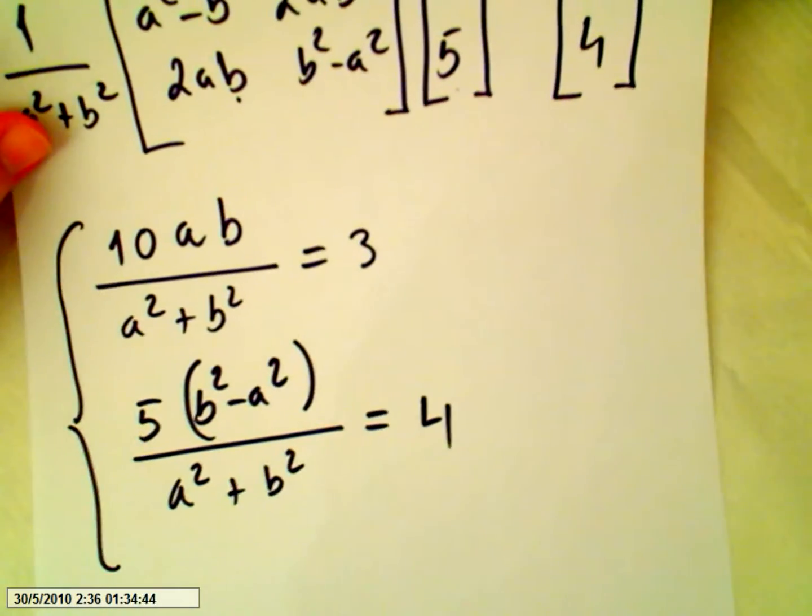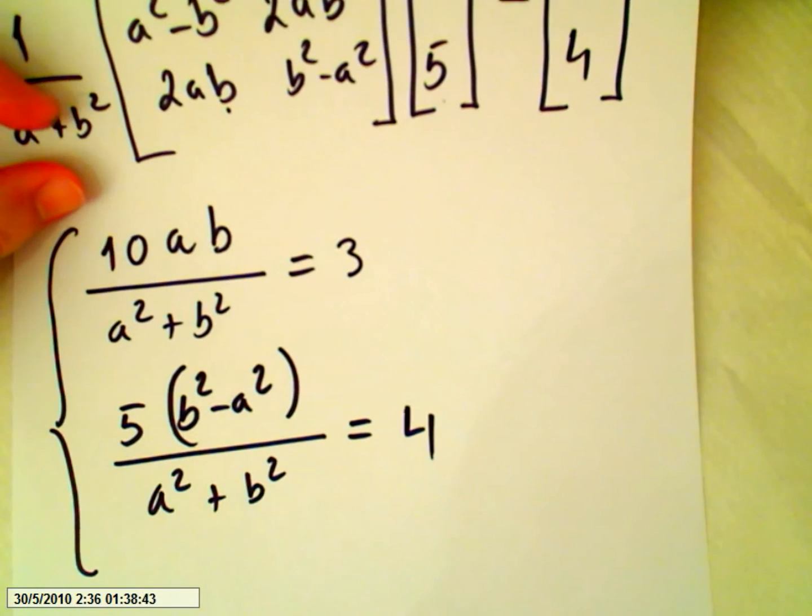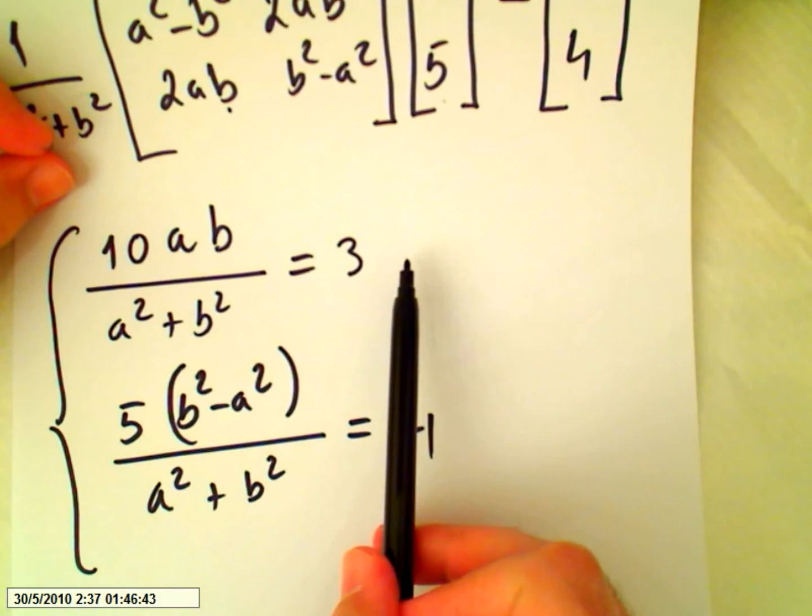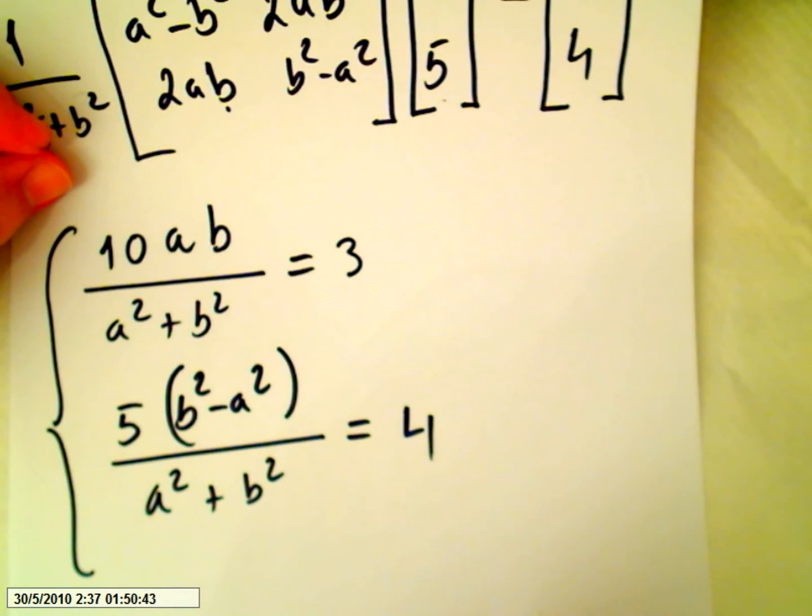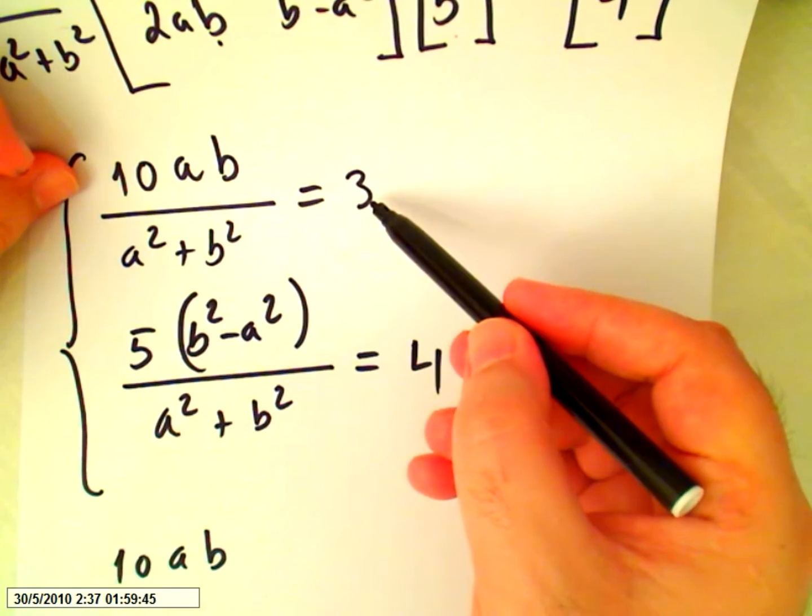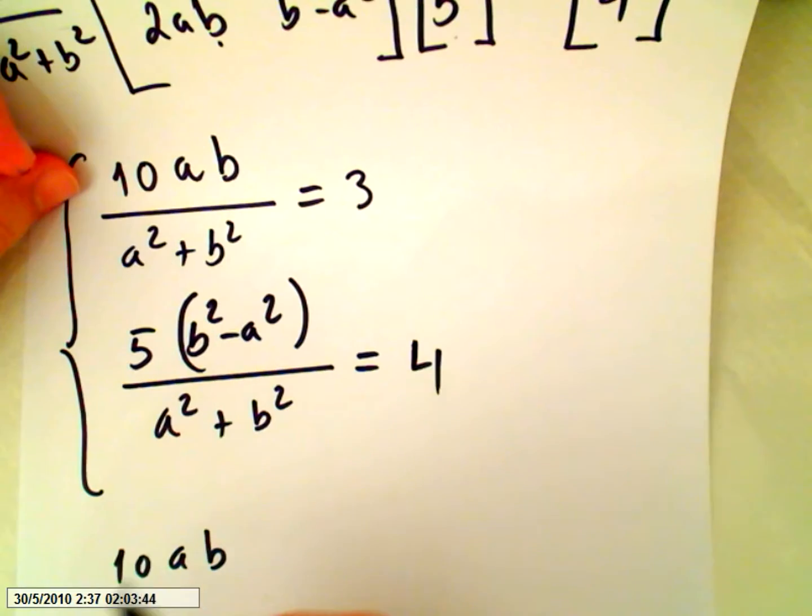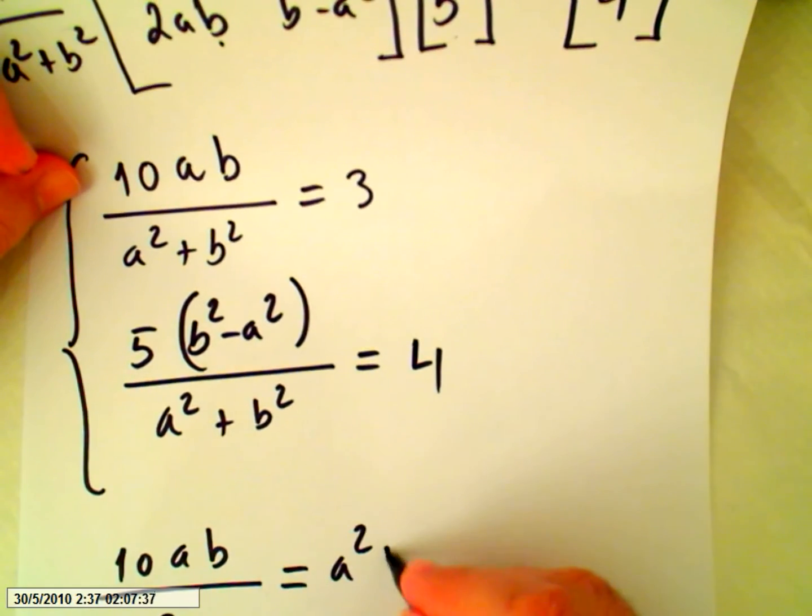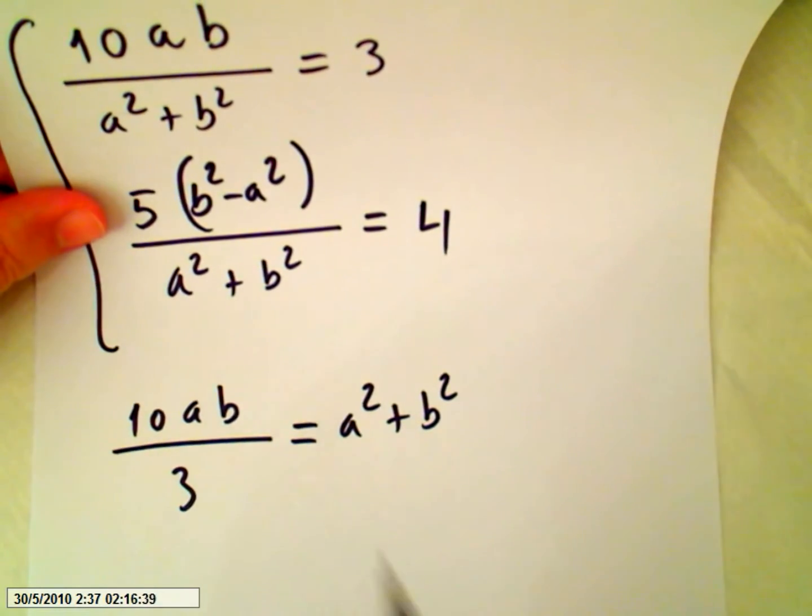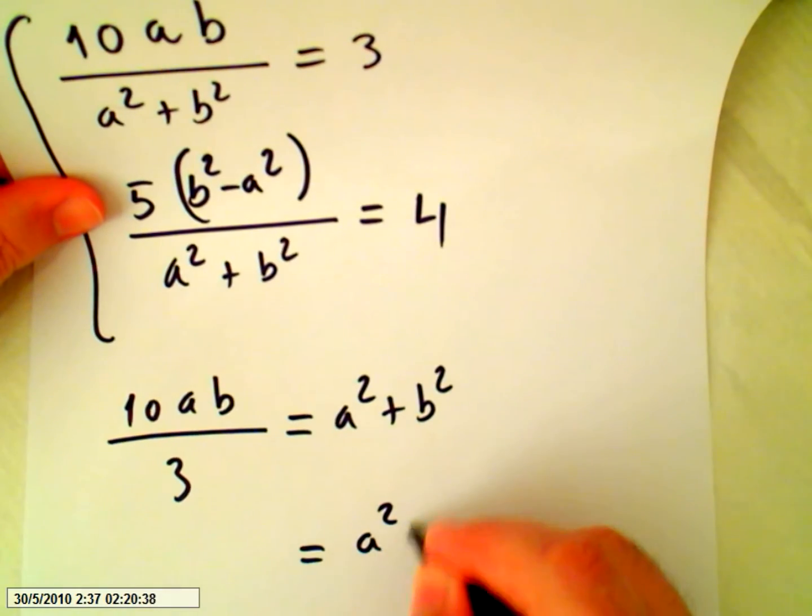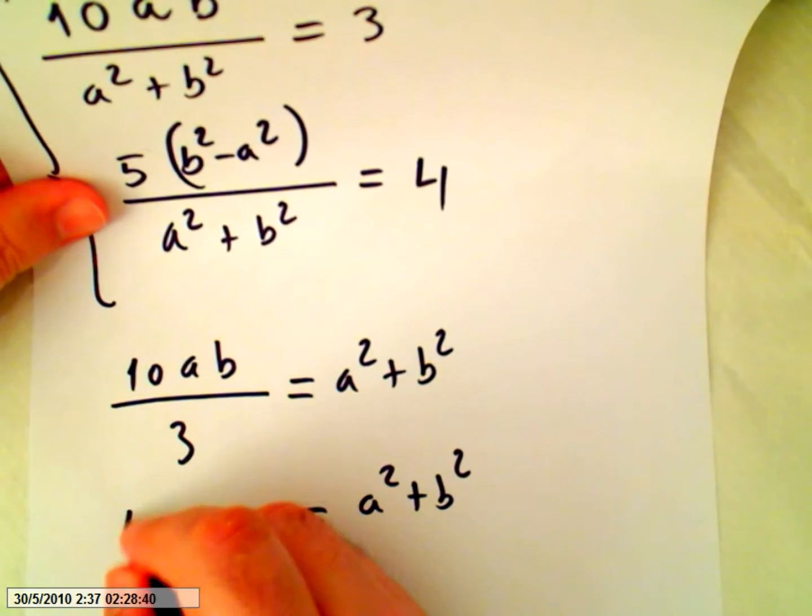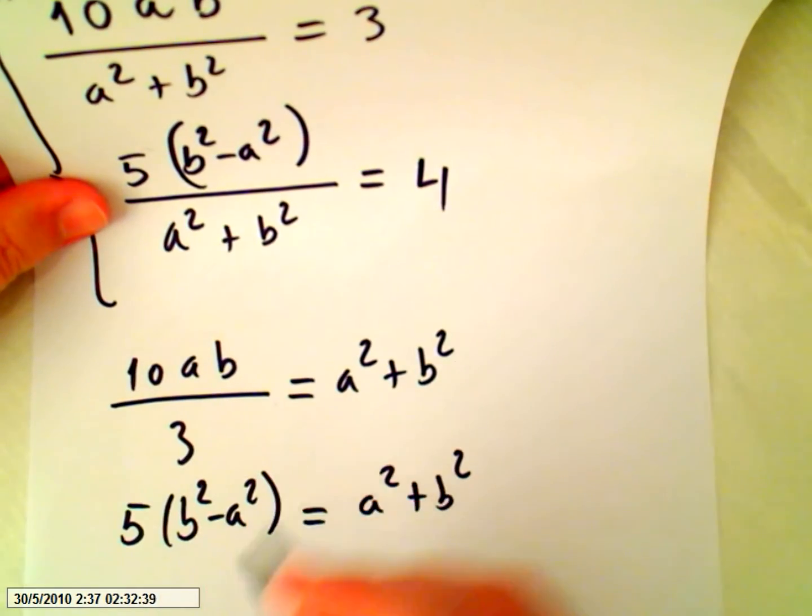Okay, these calculations can be tedious and tricky. My suggestion is we will make a squared plus b squared the subject, and doing that we can equal these two. So 10ab over 3, and we get a squared plus b squared as we wanted. And here we can say a squared plus b squared equals 5b squared minus a squared over 4.